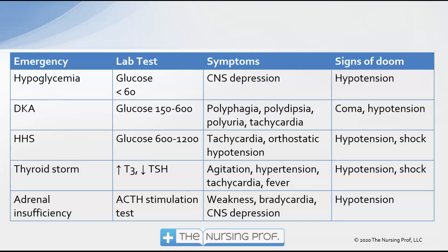HHS — hyperosmolar hyperglycemic syndrome — presents with glucose very high in the range of 600 to 1200. Tachycardia and orthostatic hypotension are primary symptoms, with hypotension and shock as the signs of doom. In thyroid storm, expect elevated T3 with decreased TSH; agitation, hypertension, tachycardia, and fever are symptoms, with hypotension and shock — indicating depletion of thyroid hormones — as the signs of doom.